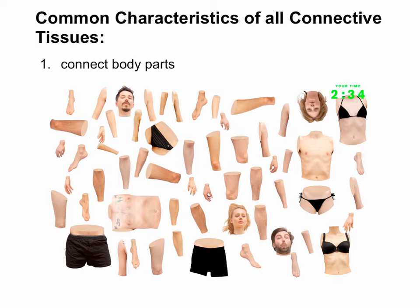They can physically connect body parts, like a tendon would connect a muscle to a bone, but they also connect in other ways — like the cardiovascular system would connect the respiratory system, the urinary system, and the digestive system with all other cells of the body. So it's not just a direct physical connection, but also a functional connection.